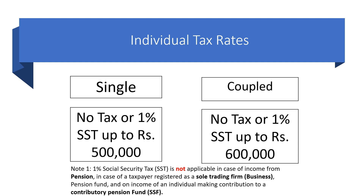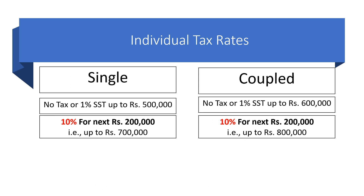The next slab is ten percent. If your gross income or taxable income is between five lakh and seven lakh, you have to pay ten percent on any amount exceeding five lakh.